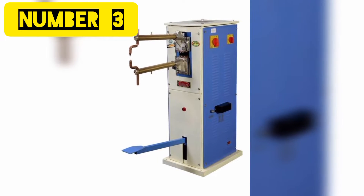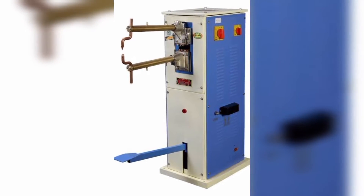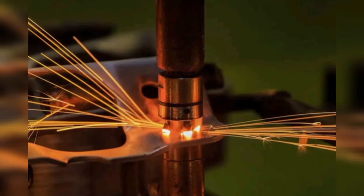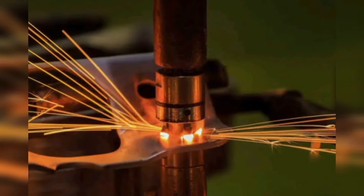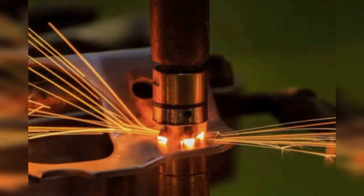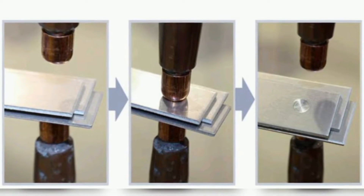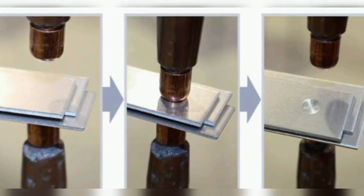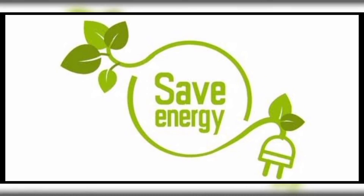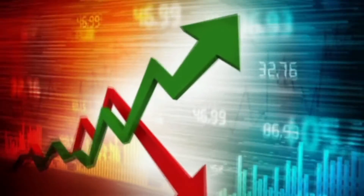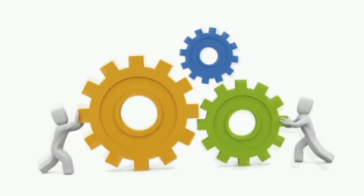Number 3: Spot Welding Machine. Spot welding is a resistance welding used for welding two or more metal sheets together by applying pressure and heat to the weld area by electric current. These machines have advantages such as effective power usage, high manufacturing rate, simple automation, etc.